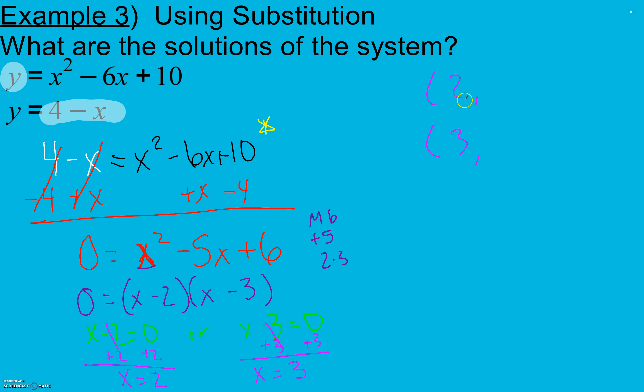To find my y values, I take my x values and substitute them into x for one of my equations. I'm going to use the bottom here, my linear equation. Doesn't matter which one you use. I just use that one because it's easier to plug into just x than into x squared and x. When I plug in 2, 4 minus 2 gives me 2. When I plug in 3, 4 minus 3 gives me 1. We're going to write those as ordered pairs. So (2, 2) and (3, 1) are my solutions.